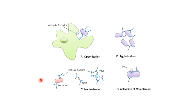Neutralization is another antibody function. What does a virus do to hurt you? It inserts its own DNA into your cells. So neutralization would mean the antibody physically covers the part of the virus that can inject its DNA. For a bacterium, we're physically blocking the part that secretes exotoxins or endotoxins — it's like putting a condom on a virus so it can't put its DNA in your cells and can't do you any harm.